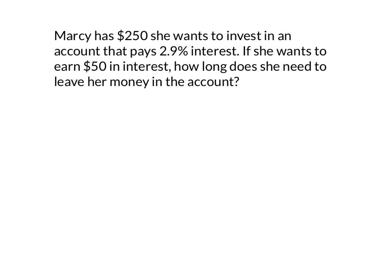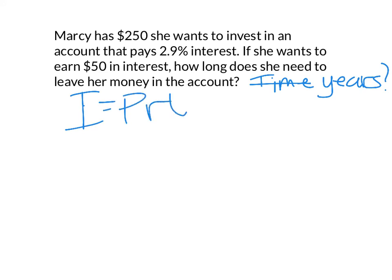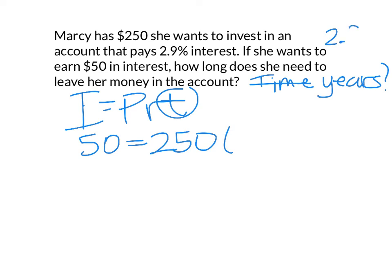Marcy has $250 she wants to invest in an account that pays 2.9% interest. If she wants to earn $50 in interest, how long does she need to leave her money in the account? So this one is looking for the time — specifically the years. So instead of time, let's put years; that's what we're looking for. I start with I equals PRT. I'm looking for T. The interest is $50. The principal is $250 — that was the original amount deposited. The rate is 2.9%, and to turn that into a decimal correctly: 2.9 per 100, so 2.9 divided by 100, which gives you 0.029. And the number of years — time — is what we're looking for.